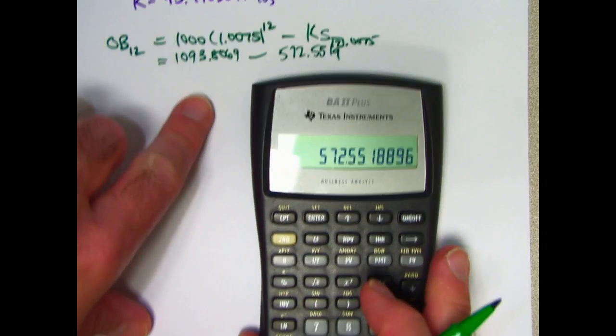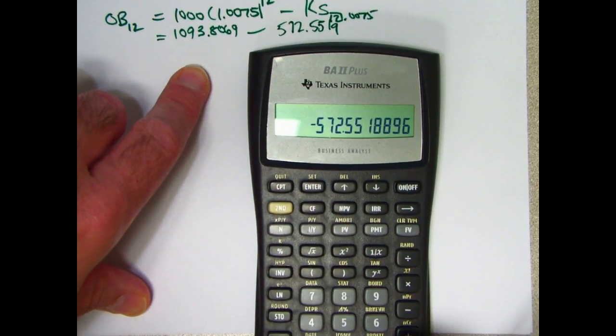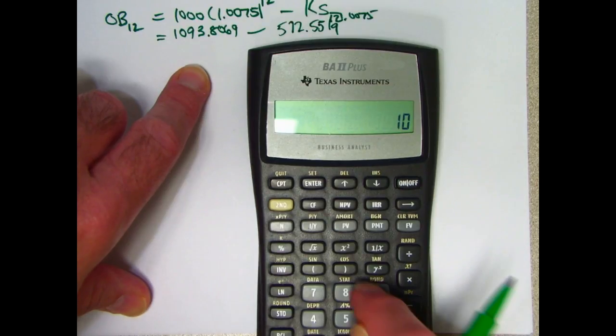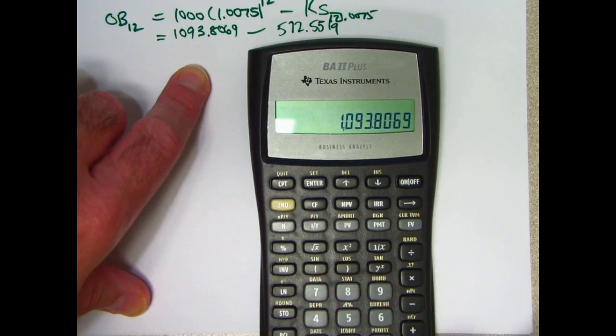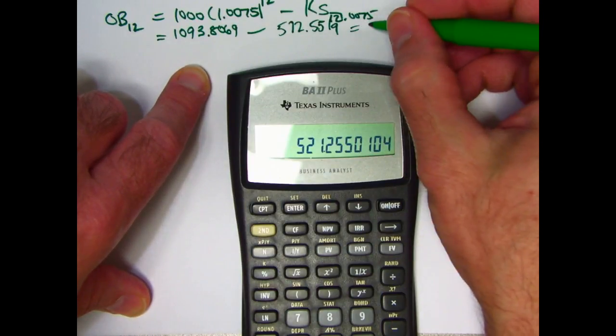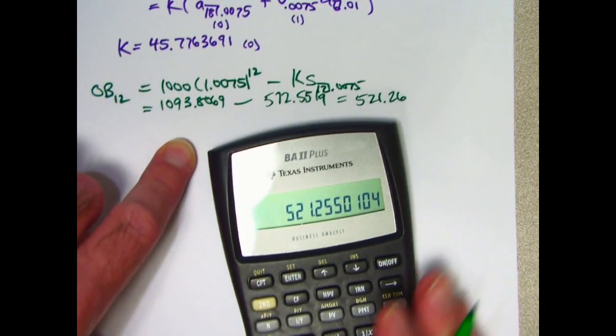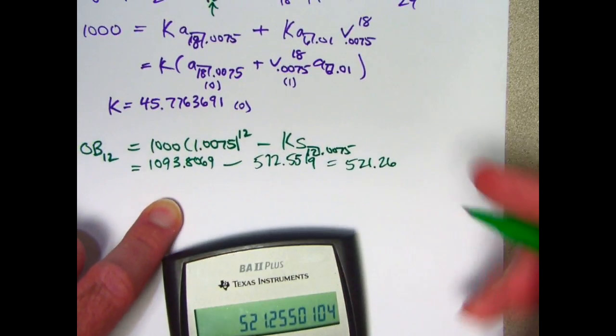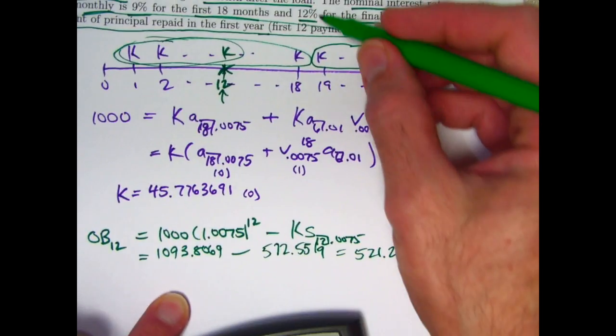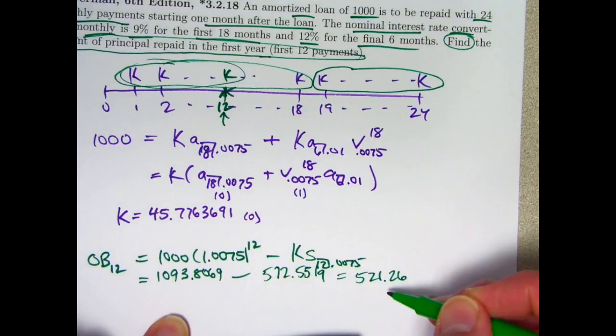Do this difference now. Subtract this from 1,093.8069. We get an outstanding balance of $521.26, which is correct, and it would make our final answer $1,000 minus that, which would be $478.74.